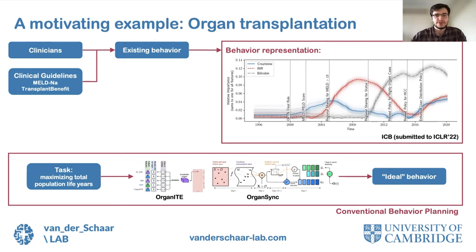In a recent paper called ICB, we investigated how the transplantation behavior has been evolving over time, starting from 1996 up to today. Using ICB, we were able to identify how the importance of various factors relevant to liver transplantations has been changing over time. This provides a data-driven way to judge the impact of newly introduced guidelines on clinical practice. For instance, in the figure on screen, we see the importance of keratin and INR — the factors most heavily weighted in MELD — has increased since the introduction of MELD in 2002, as one would expect, but started to decrease again as more exception points were added to the MELD system later on.